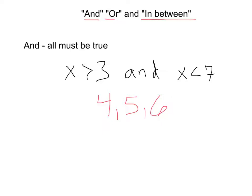But, 2 is less than 7, but it's not greater than 3. So, 2 can get cancelled off. What about, let's say, 9? 9 is greater than 3, but it's not less than 7. So, that'll get cancelled out. So, whenever you have an and, you're thinking of what makes all things true.